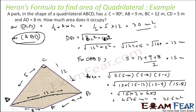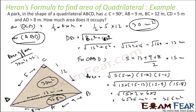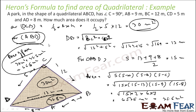So the area of the first triangle (DCB) is 30 meter square, and the area of triangle ABD is 35.5 meter square. You add both areas: 30 plus 35.5 equals 65.5 meter square.